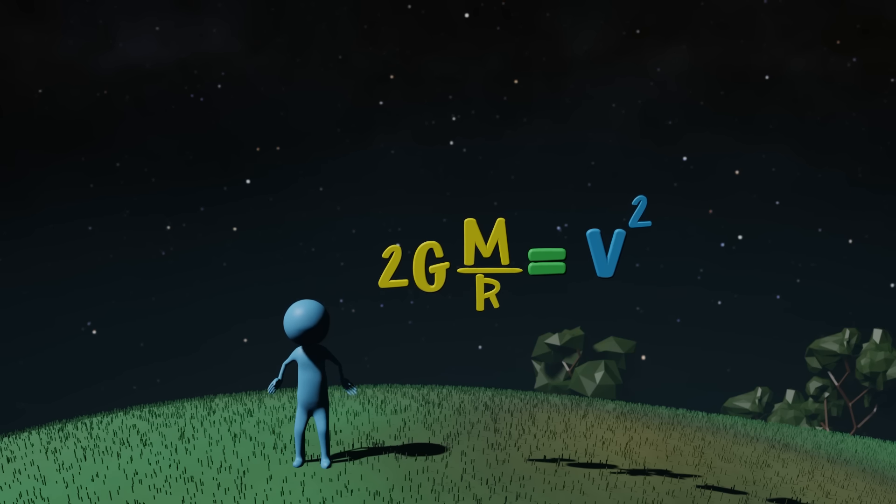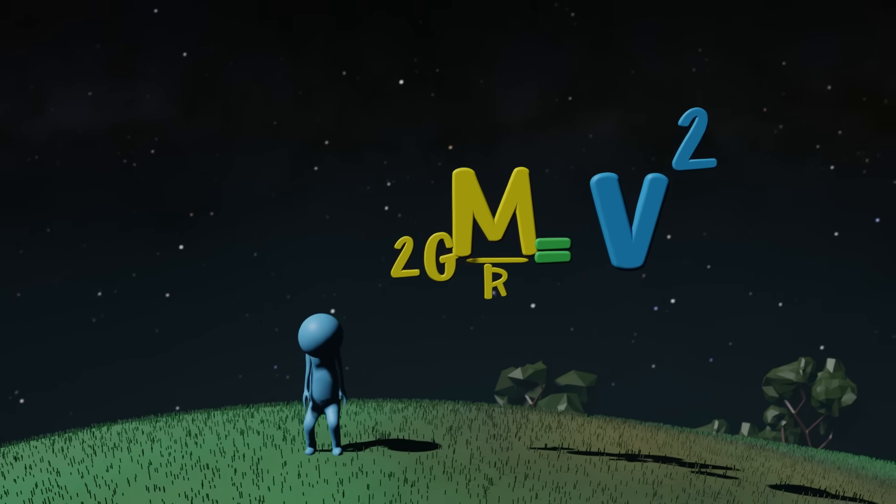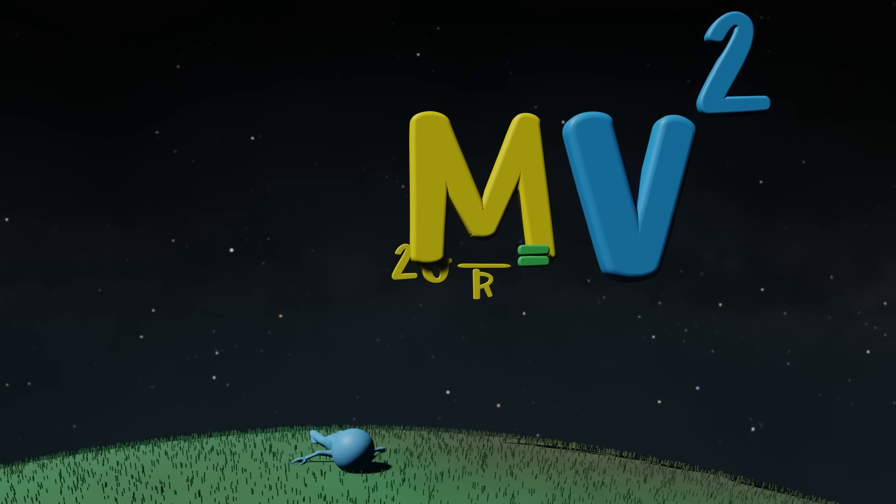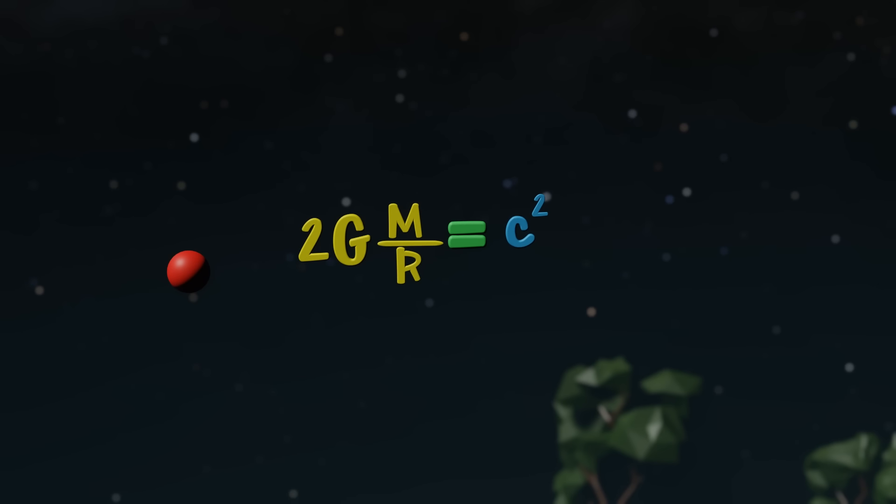But what if gravity was stronger? What if you had to go really fast? Like, too fast? Let's say, the speed of light. Well, we can plug in C or V, and suddenly we have an equation that describes a gravitational field not even light can escape from. If we then solve for R, we have the distance from the gravitational source at which light cannot escape. This is the Schwarzschild radius, or event horizon, and now we've identified our black hole mathematically.